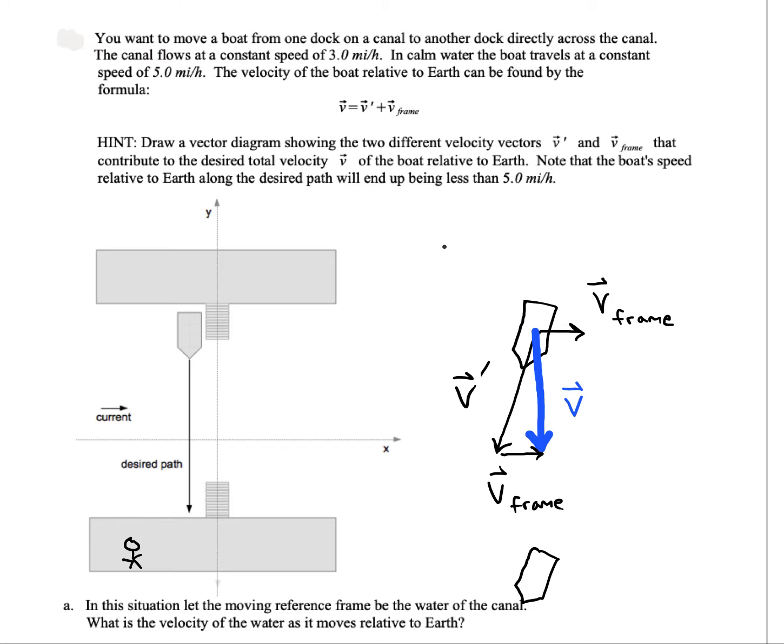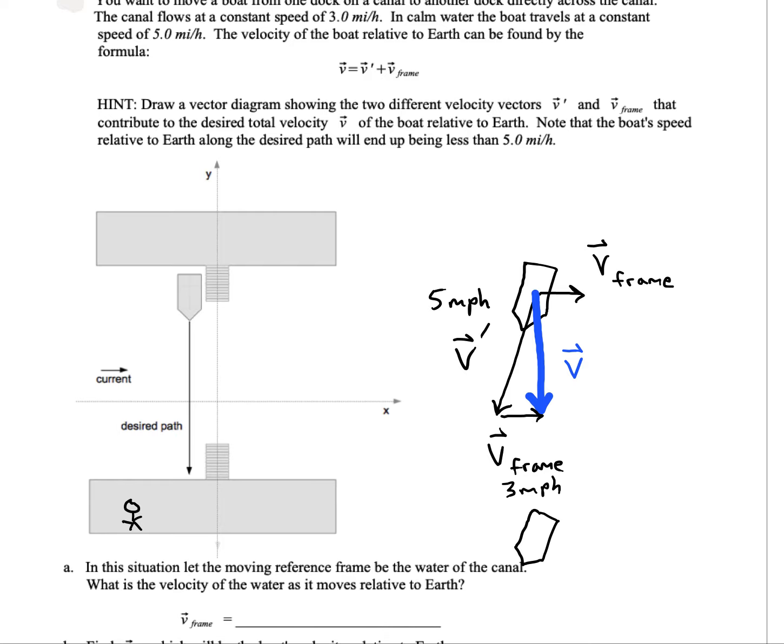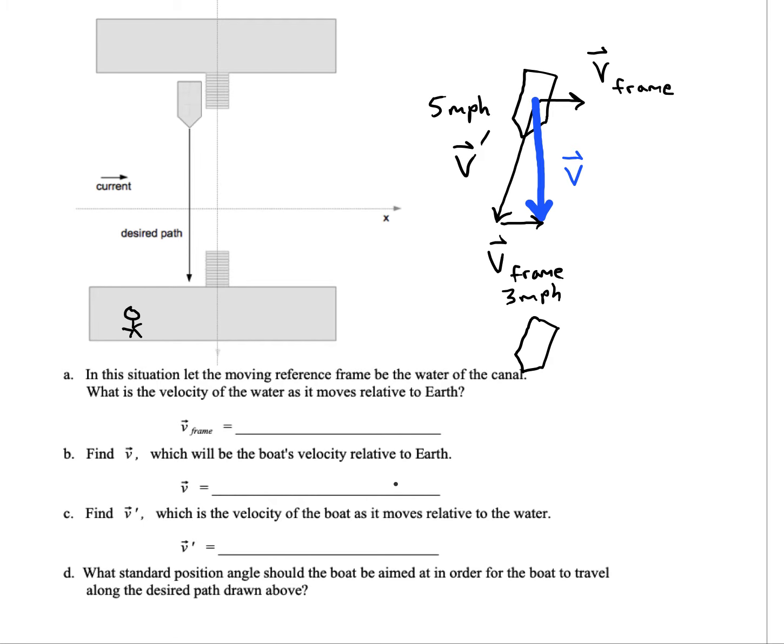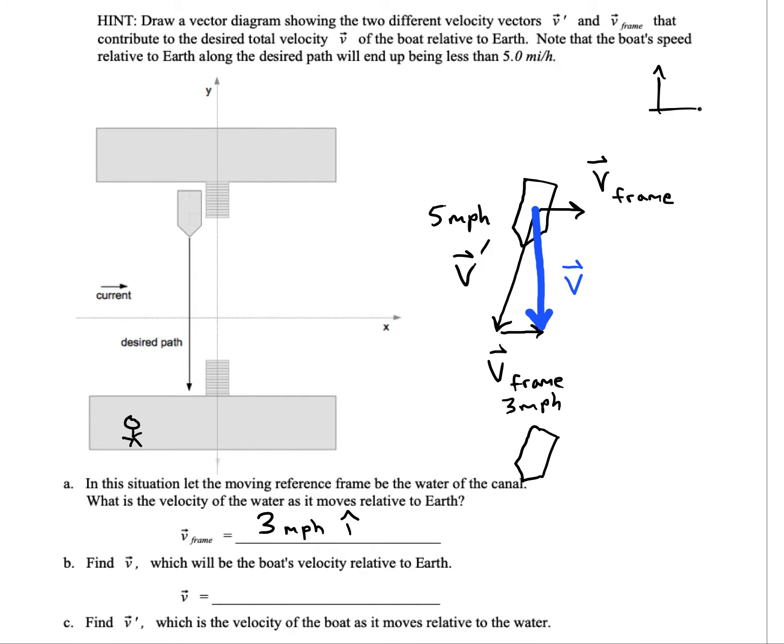V prime, the length of it, is going to be 5 miles per hour. We also know that V frame was 3 miles per hour. V prime is the speed of the boat there. V frame is the speed of the water. V frame is 3 miles per hour, and I'm going to call that in the I direction, which is to the right. We'll say that to the right is the positive X direction.